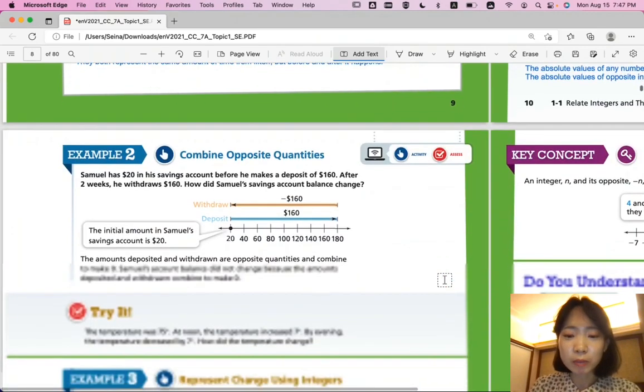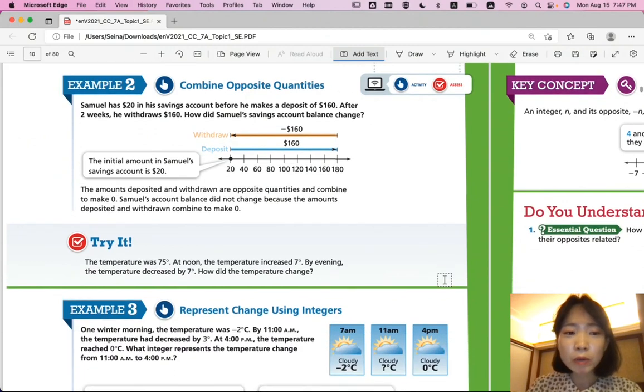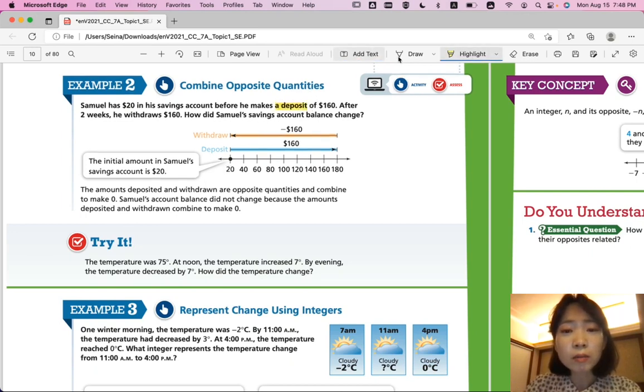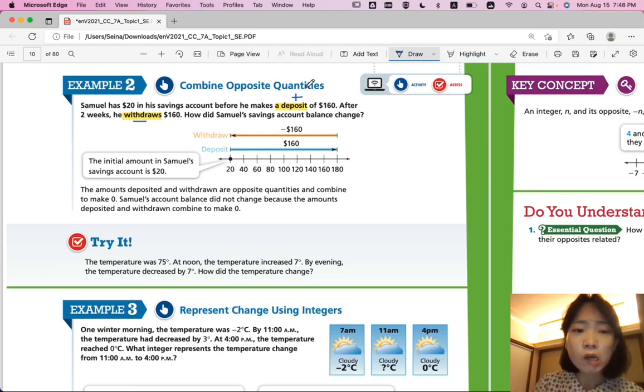Let's look at example two. Combine opposite quantities. Samuel has $20 in his savings account before he makes a deposit of $160. After two weeks, he withdraws $160. How does Samuel's savings account balance change? So first, he starts with $20. He makes a deposit. Making a deposit means you add money to your bank account. And making a withdrawal, when he withdraws, you're subtracting from your bank account. You're taking money out.